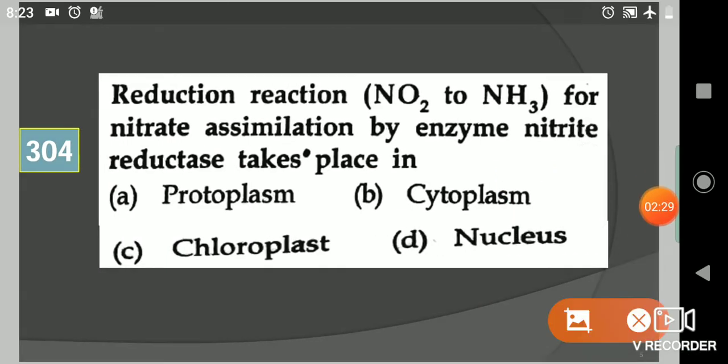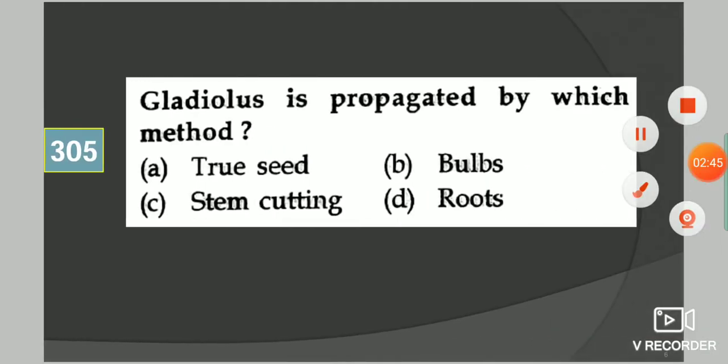Come to the next question: Reduction reaction NO2 to NH3 for nitrate assimilation by enzyme nitrate reductase takes place in? Your options are protoplasm, cytoplasm, chloroplast, nucleus. Your answer is cytoplasm.